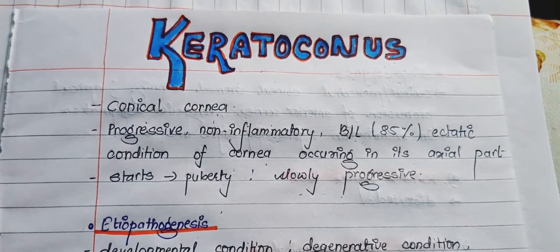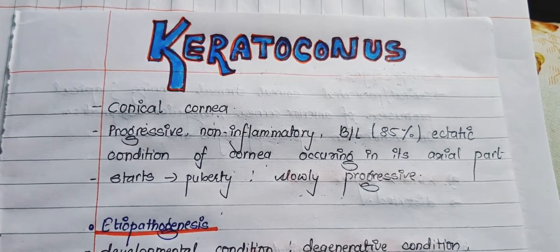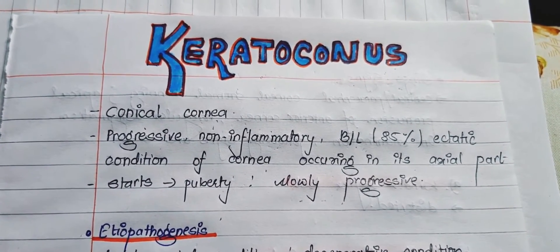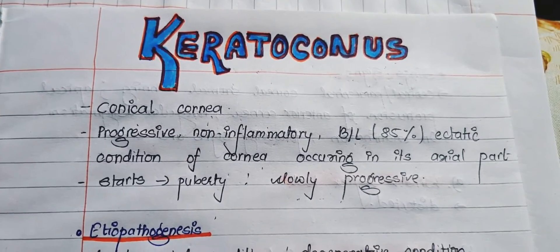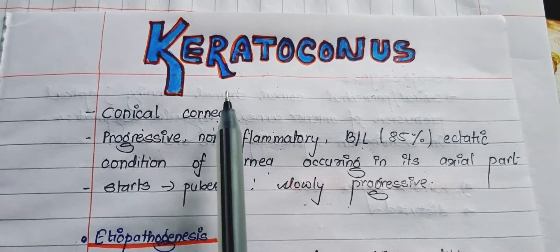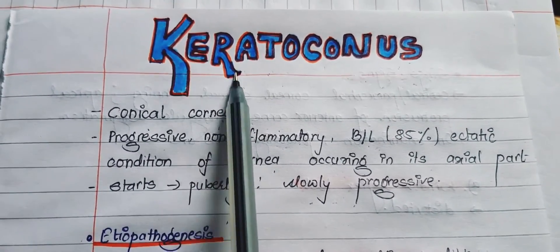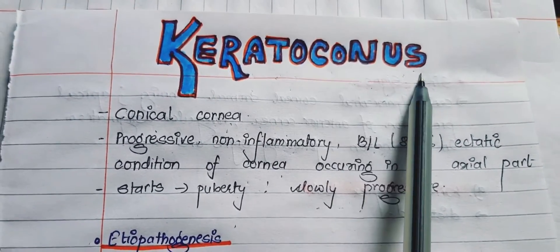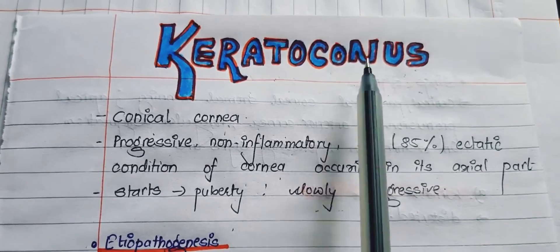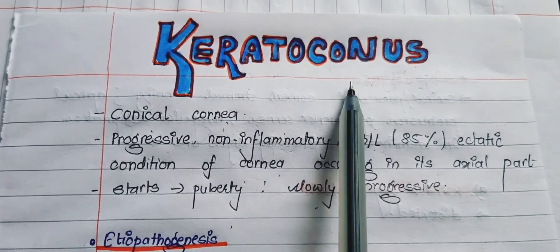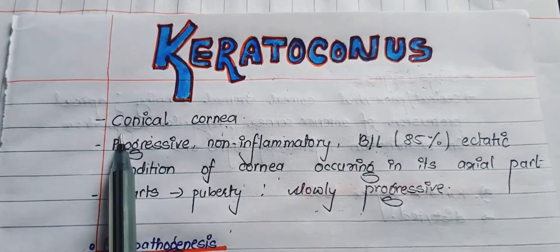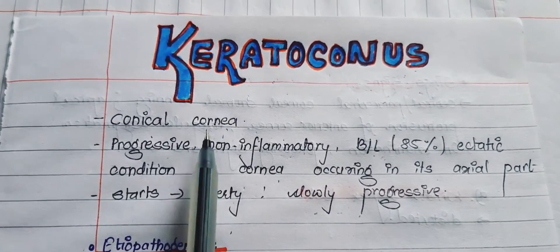Hello guys, welcome back to my channel. Today in this video we will be talking about keratoconus. As the name suggests, kerato means cornea and conus means conical, hence keratoconus is a condition in which the person has a conical cornea.